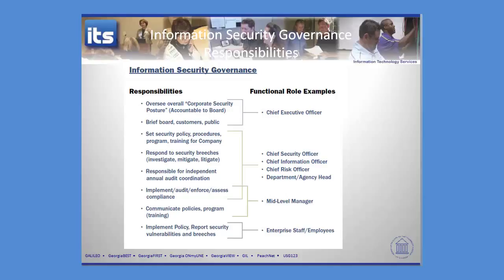Within information security governance, there are key roles with some overlap. At the top, the Chief Executive Officer is accountable to the board for everything that happens or fails to happen in the organization. The CEO's job is to promote the brand, brief the board, brief customers and the public, know what's going on within the organization, and engage external constituents.